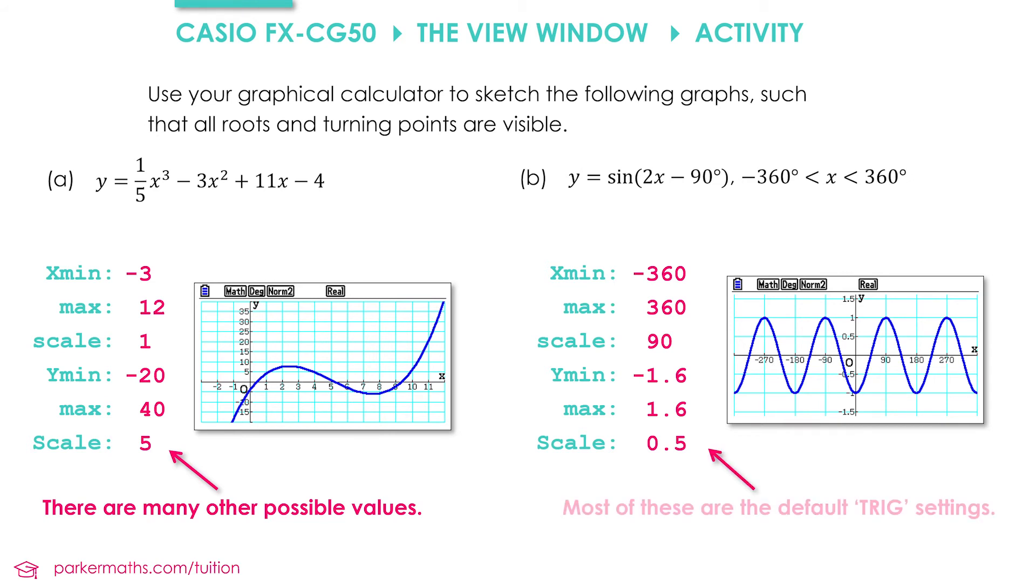When I did part B, I used the trig preset to get most of my settings. Then all I needed to do was change the x min and x max to match what it says in the question.